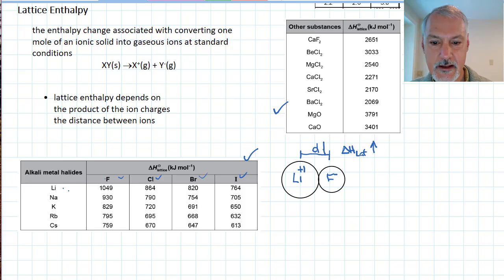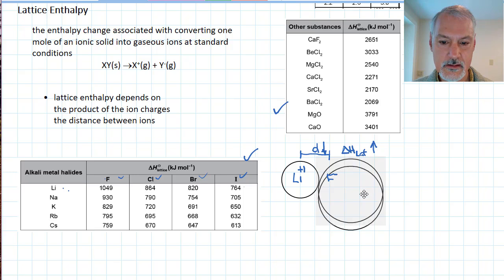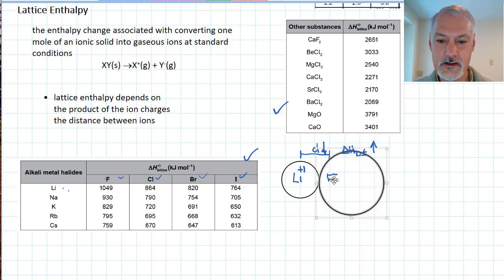So as the distance goes down, that strength of bondage becomes stronger and stronger. We can see that because if we go to iodine, which is a much larger substance, we essentially increase that distance between the centers of our two species. And that increasing size results in a weakening of the lattice enthalpy.